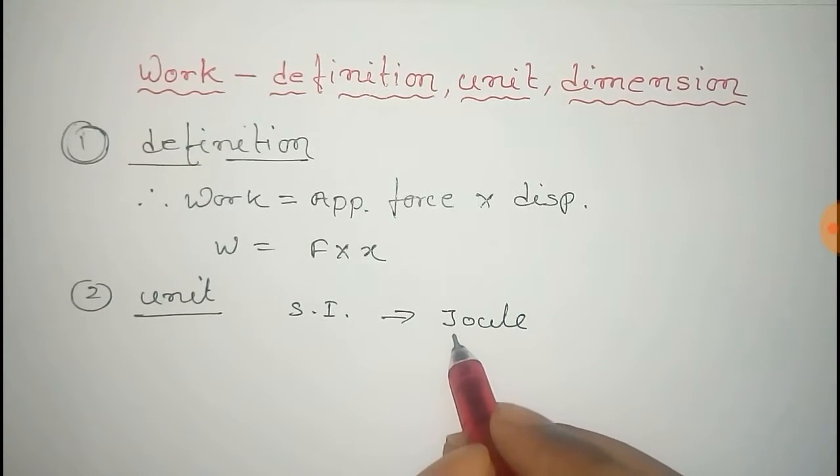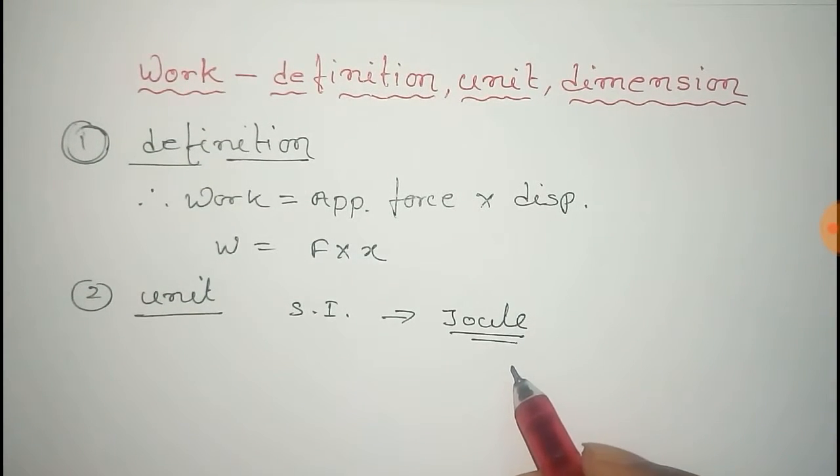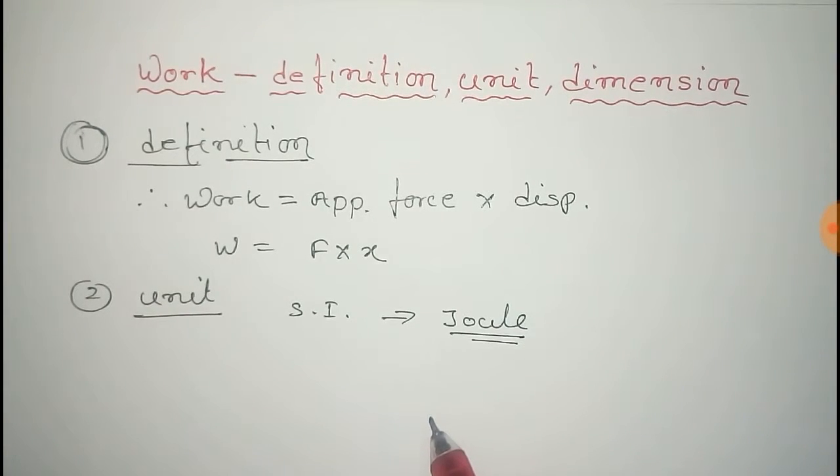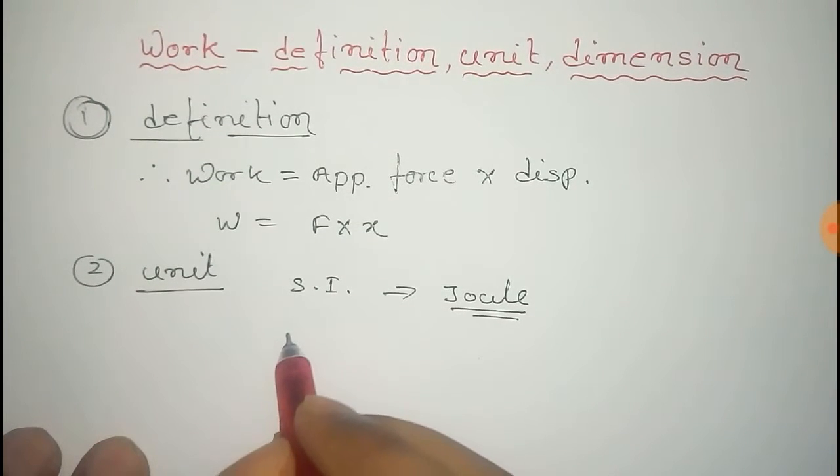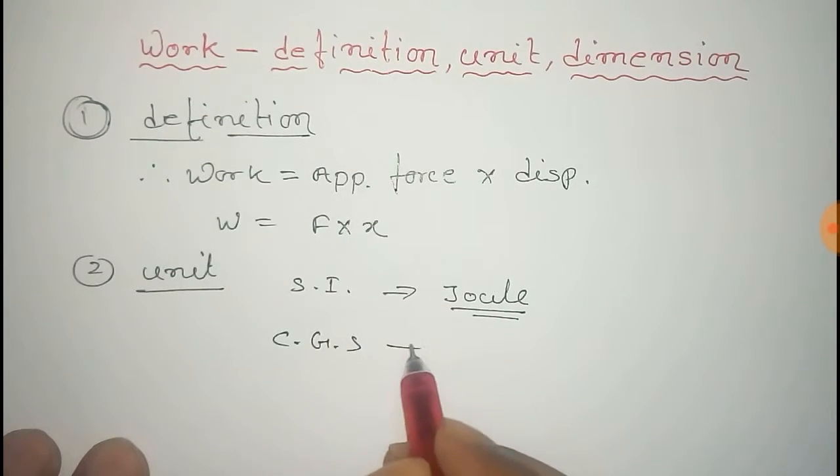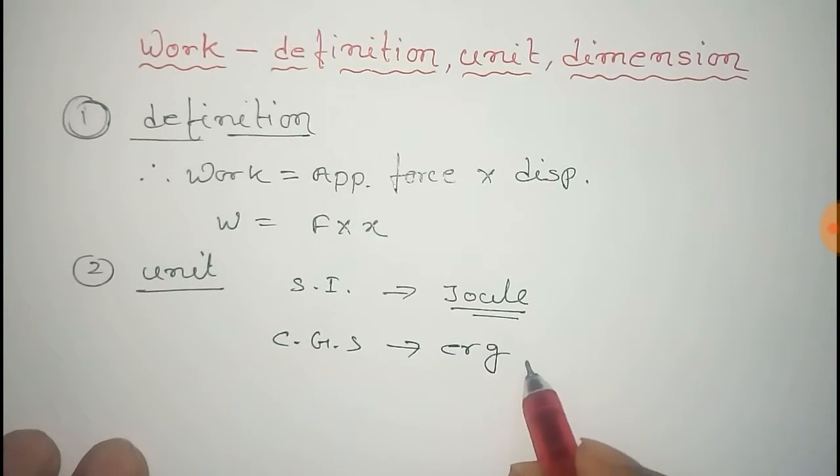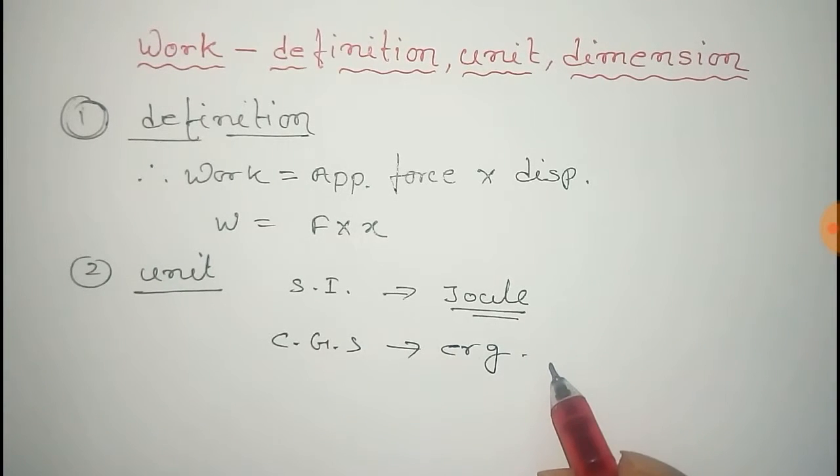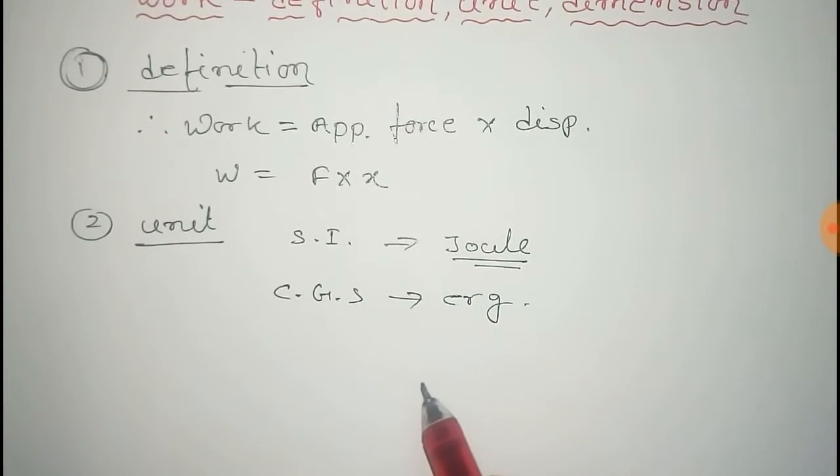This is given by work expended by a force of one Newton through a displacement of one meter, and its CGS unit is erg. Now for its dimension: